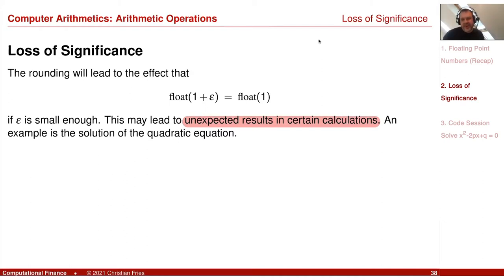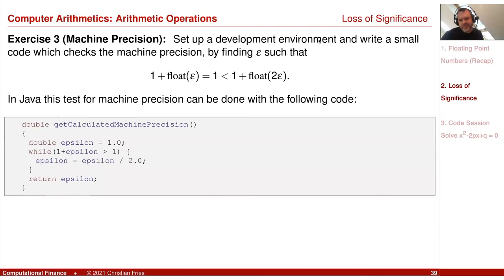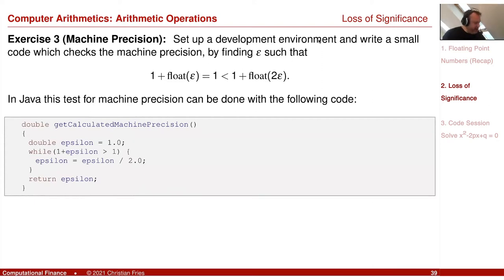I would like to give you a very nice small example that calculates the solution of a quadratic equation. You know it as a mathematician — there's a formula from school. You just implement this and you just believe you get the right result. We already had this code: we can calculate epsilon by this little algorithm, making it smaller until one plus epsilon cannot be distinguished from one.